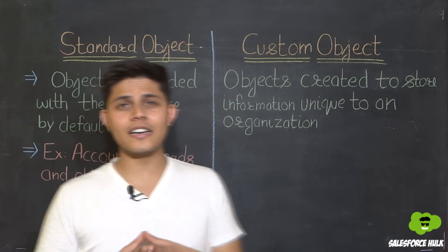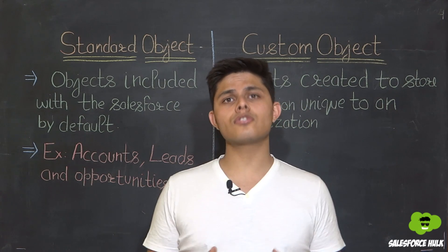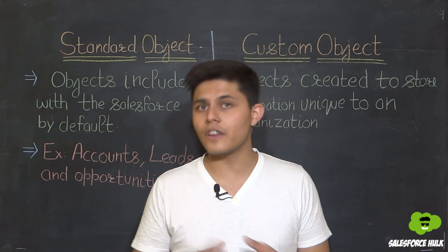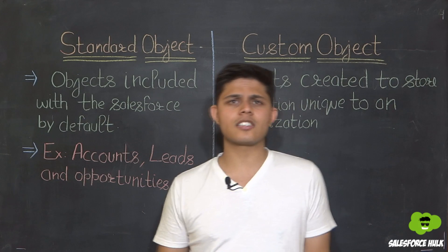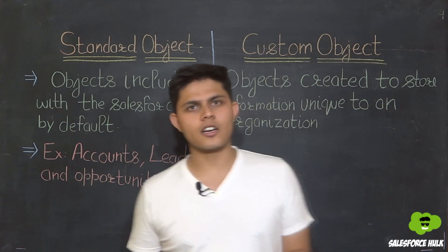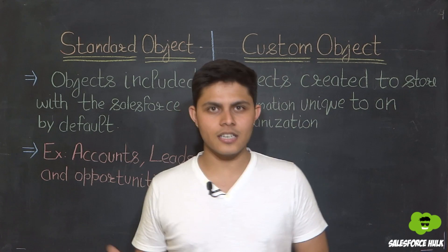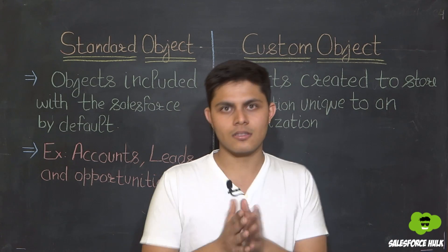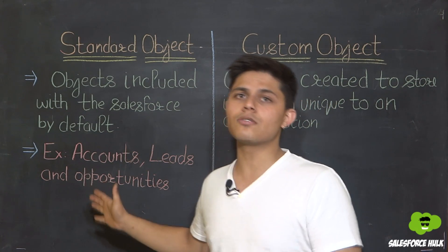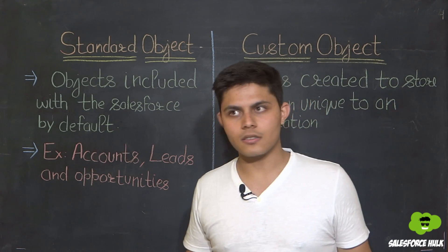You might be thinking why Salesforce provided some objects by default. These objects store information required for every business. Accounts are basically your customers or prospects — every business needs to store that information. Leads are potential customers; if there is no lead, there is no business. Opportunities are deals — if you have the lead, you want to convert them and make a deal. That is why Salesforce has provided standard objects in their org.